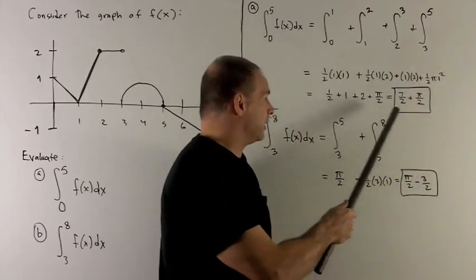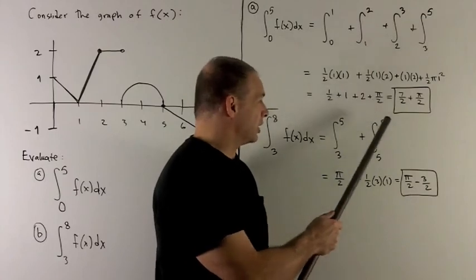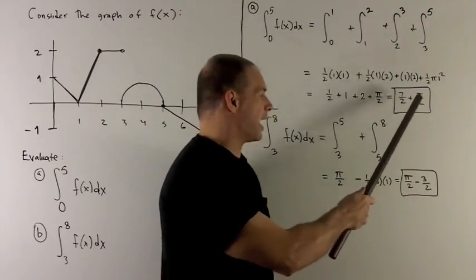Now I can add all these up: one-half plus 1 plus 2 plus π/2. That gives me 7/2 plus π/2.